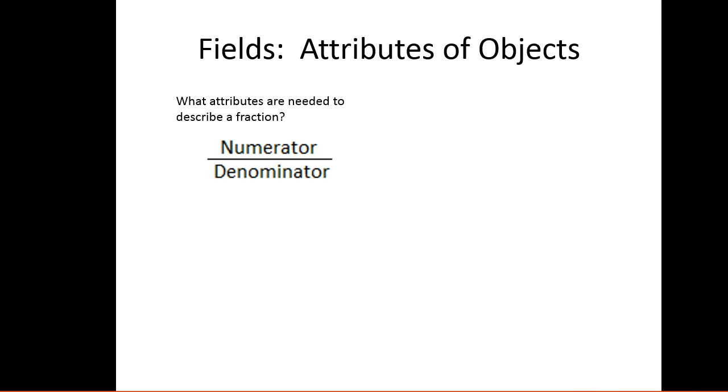Let's start by talking about the attributes of the objects. When you design your own class, you need to first ask yourself: what attributes are needed to describe that specific object you're going to make? In our case, a fraction. Well, we need a numerator and denominator to define a fraction. Then once you know what attributes you need, you need to ask: what type of variable would those attributes be? In our case, the numerator would be an integer and the denominator would be an integer.